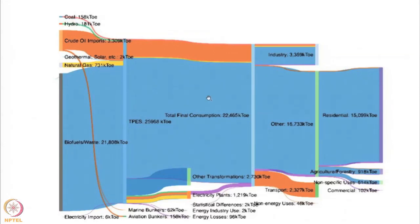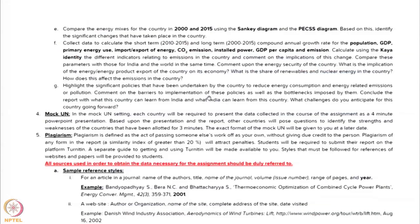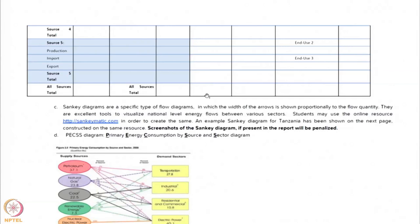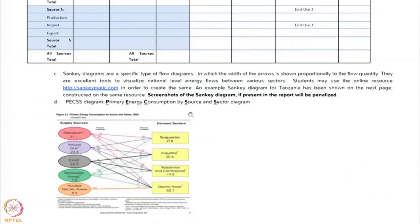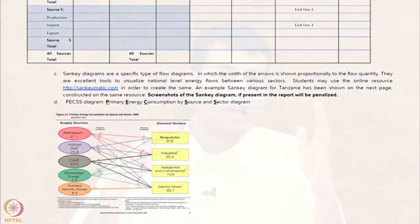After this, we also asked the students to construct a PECSS diagram, which stands for primary energy consumption by source and sector. This gives a very clear understanding of what the different primary energy sources are, what their contributions to the energy requirements of that particular country are, and what their different breakups are in terms of usage.